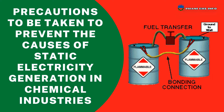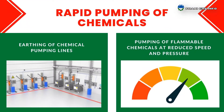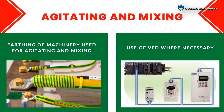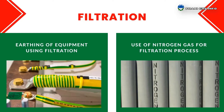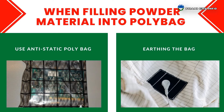Precautions to be taken to prevent the causes of static electricity generation in chemical industries: For rapid pumping of chemicals, provide earthing for chemical pumping lines and pump flammable chemicals at reduced speed and pressure. For agitating and mixing, provide earthing of machinery used for agitating and mixing, and use VFT where necessary. For filtration, provide earthing for equipment using filtration and use nitrogen gas for the filtration process.